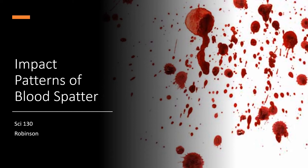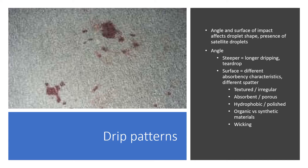Impact patterns of blood spatter: drip patterns will take different characteristics depending on the angle that the impact happened at and the surface upon which the blood impacted. This is going to affect droplet shape and whether or not there are satellite droplets.